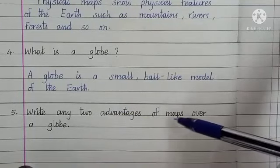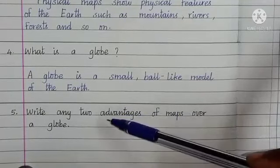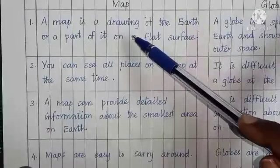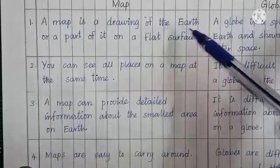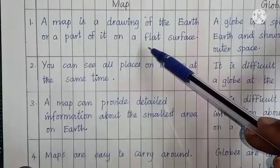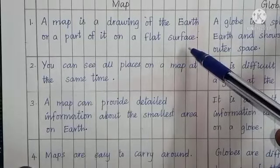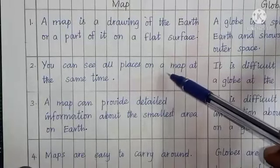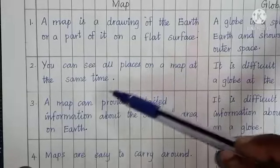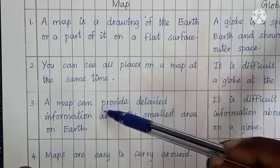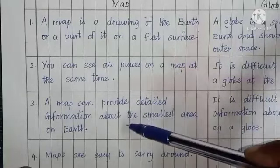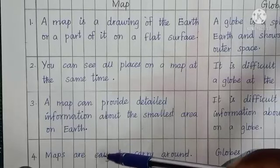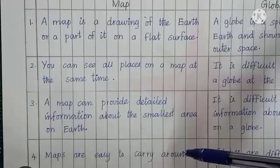Write any two advantages of maps over a globe. Map: A map is a drawing of the earth or a part of it on a flat surface. You can see all places on a map at the same time. A map can provide detailed information about the smallest area on earth. Maps are easy to carry around.